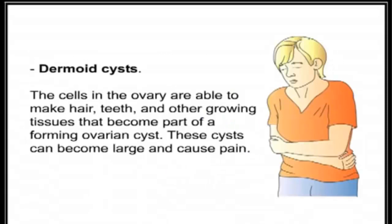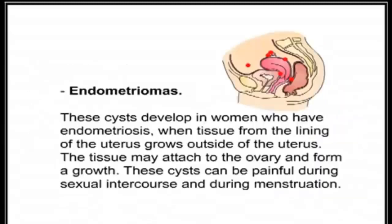Dermoid cysts: the cells in the ovary are able to make hair, teeth, and other growing tissues that become part of a forming ovarian cyst. These cysts can become large and cause pain.